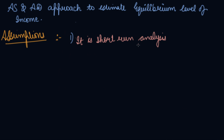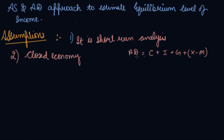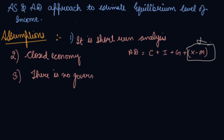In the long run, a government can take measures and resolve a particular gap, but in the short run this is not possible, so the first assumption is that it is a short-run analysis. Second, it is a closed economy, which means the AD function includes private consumption expenditure, private investment expenditure, government expenditure, plus exports minus imports. Since it is a closed economy, the external trade element is eliminated. Third, there is no government, so to simplify we assume no government expenditure. Therefore, AD equals consumption expenditure plus investment expenditure only.